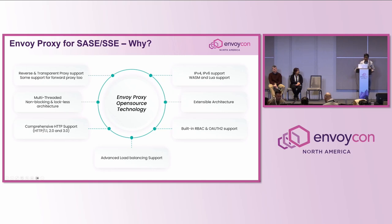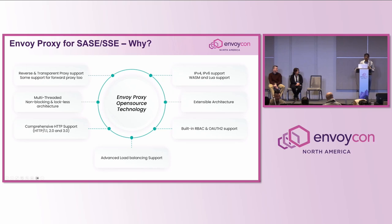Envoy has built-in HTTP/1.1, 2.0, and 3.0 support, which is very handy. It has IPv4/IPv6 support, WASM and Lua support — though we don't currently use Lua, we offer it as an option for customers. It has an extensible architecture with C++ filters and WASM filters. It has built-in RBAC and JWT support, which is very much required for ZTNA. However, Envoy needed significant enhancements to support our SASE/SSE features.